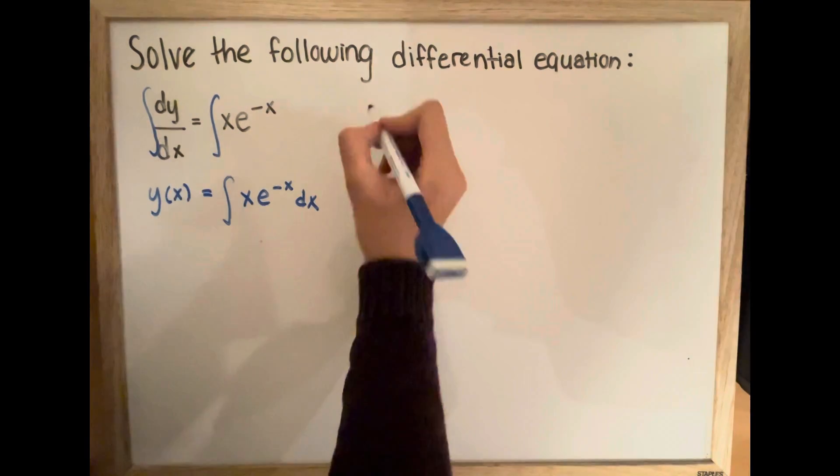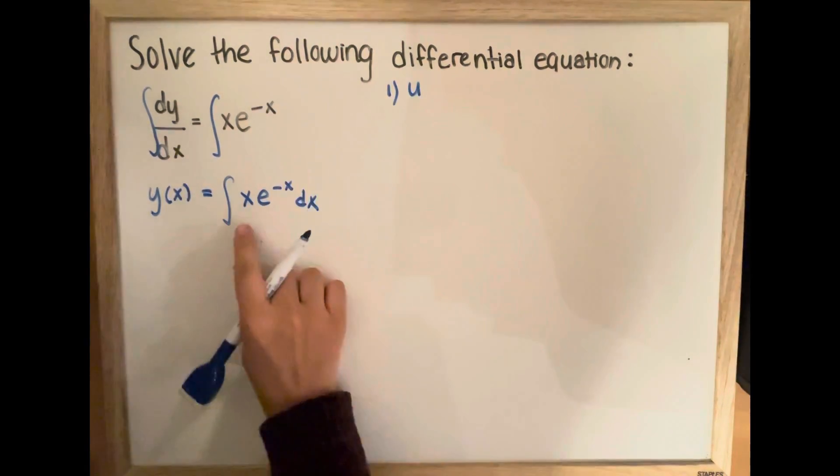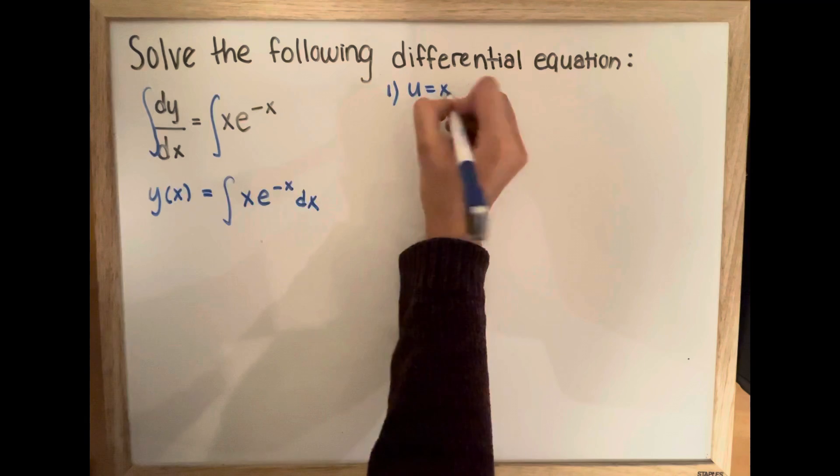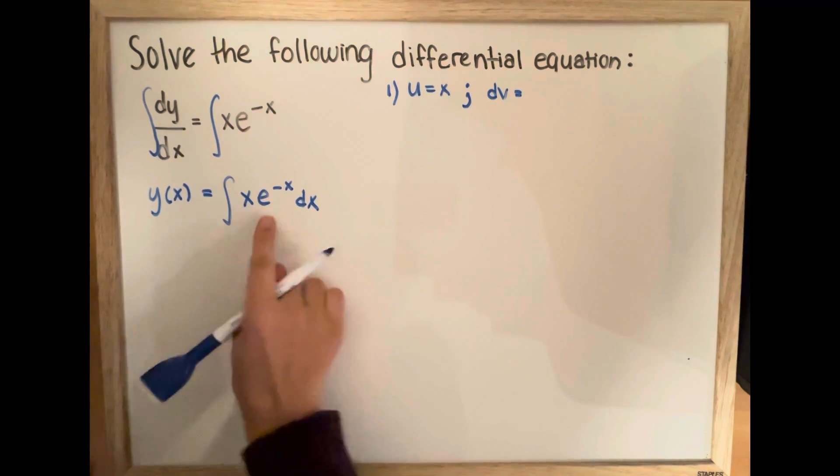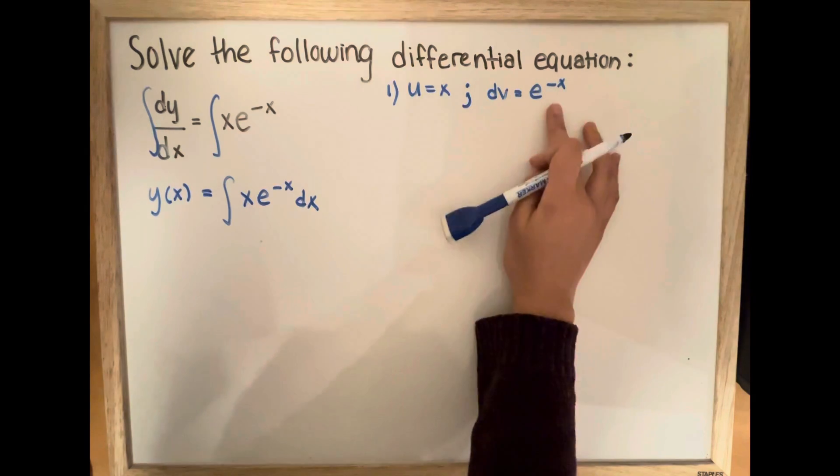So now, for the first step, we're going to set u is equal to x, and we're going to set dv is equal to e exponent negative x.